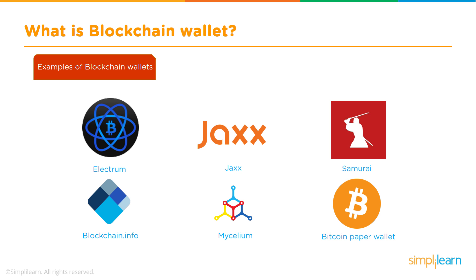Let's take a look at the ecosystem of blockchain wallets. Examples include Electrum, Blockchain.info, Jaxx, Mycelium, Samourai, and Bitcoin Paper Wallet — just a few of the many blockchain wallets existing in the market. Based on the requirement, the security you need, and the kind of wallet that suffices your needs, we will see what the categorizations of these wallets are.